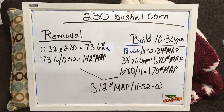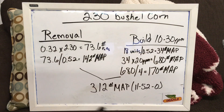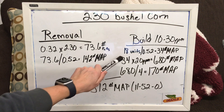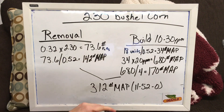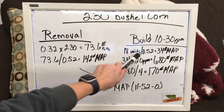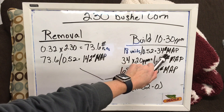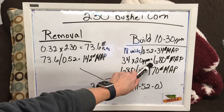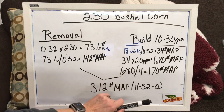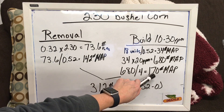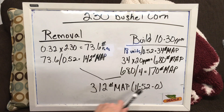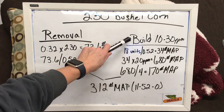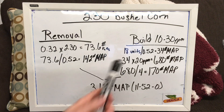I personally like to see my phosphorus soil test P1 at 30 parts per million. For this example, let's say we've got a current soil test P1 of 10 parts per million. On average, it's going to take 18 units of P2O5 to increase the soil test by one part per million. So 18 units converted into MAP is 34 pounds of MAP fertilizer to increase by one part per million. So 34 times 20 — because I'm going to take it from 10 to 30 parts per million — that's 680 pounds of MAP fertilizer. I'll do that build over four years: 680 divided by four gives me 170 pounds of MAP per year. So I've got 142 plus 170 — that's 312 pounds of MAP fertilizer to cover my removal of 230 bushel corn, as well as one quarter of my build to get me to 30 parts per million starting at 10.